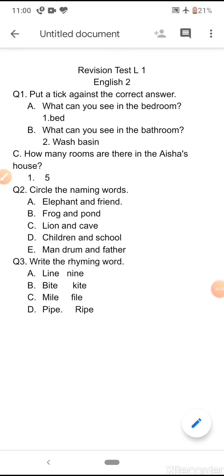Here are the answers. Your first question is put a tick against the correct answer. What can you see in the bedroom? The answer is bed. Now look at the next one. What can you see in the bathroom? The answer is wash basin.